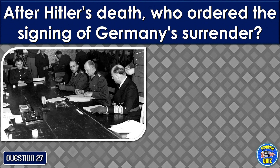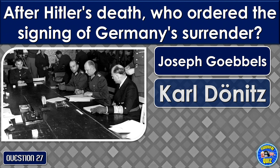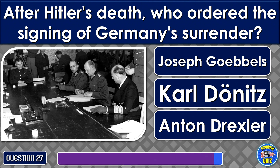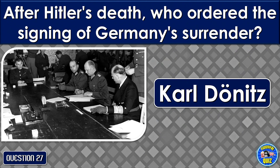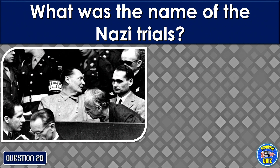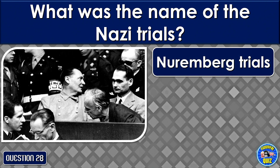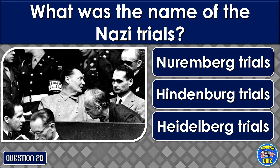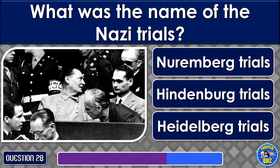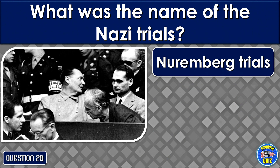After Hitler's death, who ordered the signing of Germany's surrender? Carl Dönitz. What was the name of the Nazi trials? The Nuremberg trials.